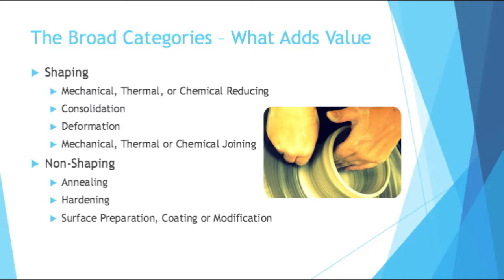There's shaping of a product, which can be mechanical, thermal, or chemical. Reducing means you're taking material away in a certain shape. There's consolidation, which means you're bringing things together. There's deformation, which means you're changing the shape of something. And there's mechanical, thermal, or chemical joining, where you're bringing multiple materials together.